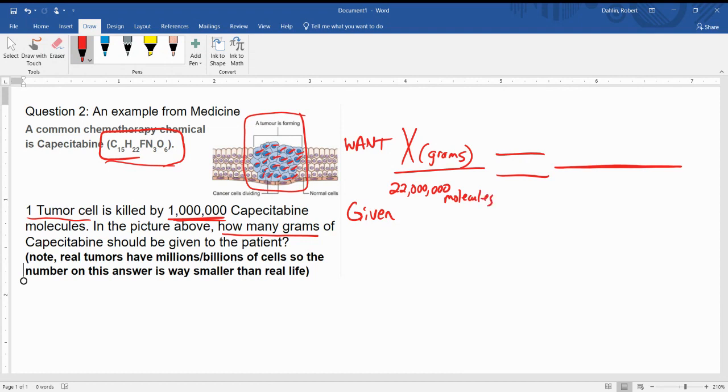So what we have to do is figure out how our grams and molecules are related to each other. Grams needs you to use the periodic table. To figure out grams on the top, we're going to have molecules on the bottom, grams on the top. We need to go back to the periodic table, look at the chemical formula and figure out how much it weighs.